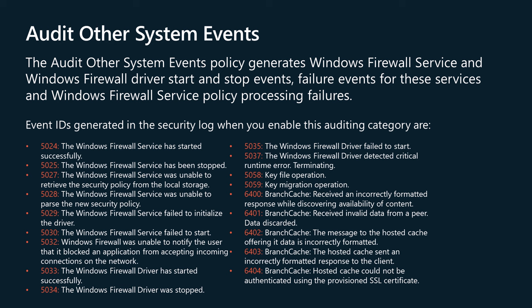The following events will be enabled if you configure auditing through this policy. 5024: the Windows Firewall Service has started successfully. 5025: the Windows Firewall Service has been stopped. 5027: the Windows Firewall Service was unable to retrieve the security policy from the local storage. 5028: the Windows Firewall Service was unable to parse the new security policy. 5029: the Windows Firewall Service failed to initialize the driver. 5030: the Windows Firewall Service failed to start. 5032: Windows Firewall was unable to notify the user that it blocked an application from accepting incoming connections on the network.